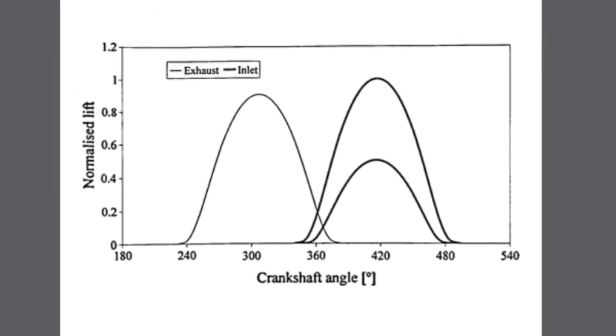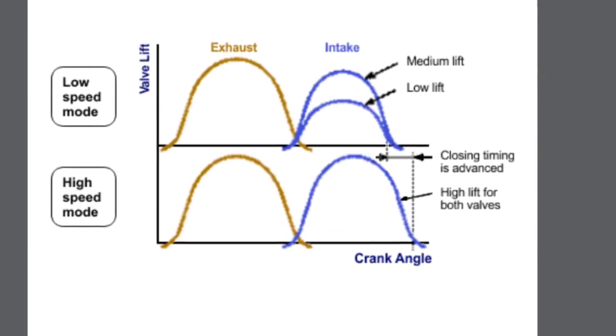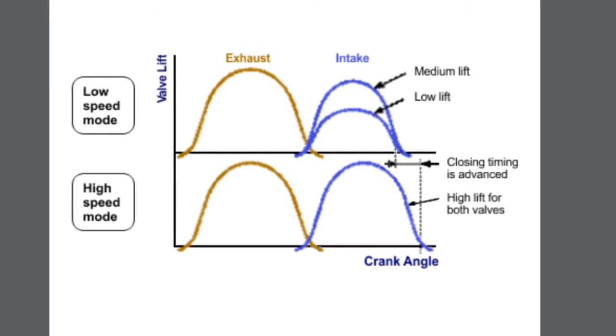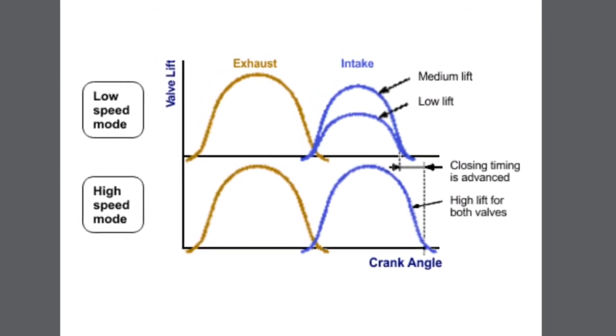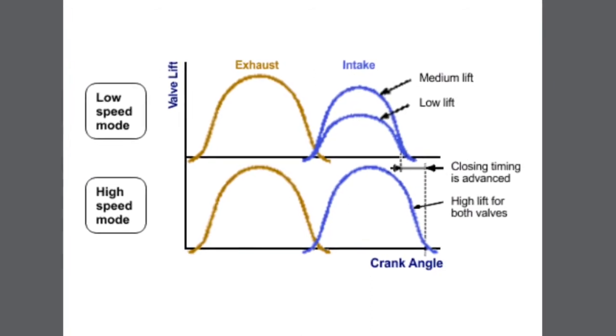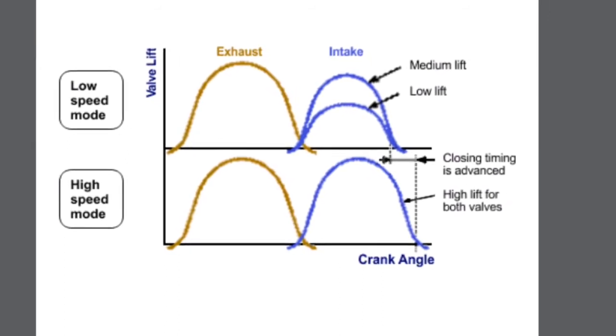In this figure, the x-axis shows the crank angle or time, and the y-axis is the valve lift. Here you can see the low speed mode. In the intake valve side, we can provide a low or medium lift to provide higher velocity to the intake air to make more turbulence in the combustion chamber for better combustion.